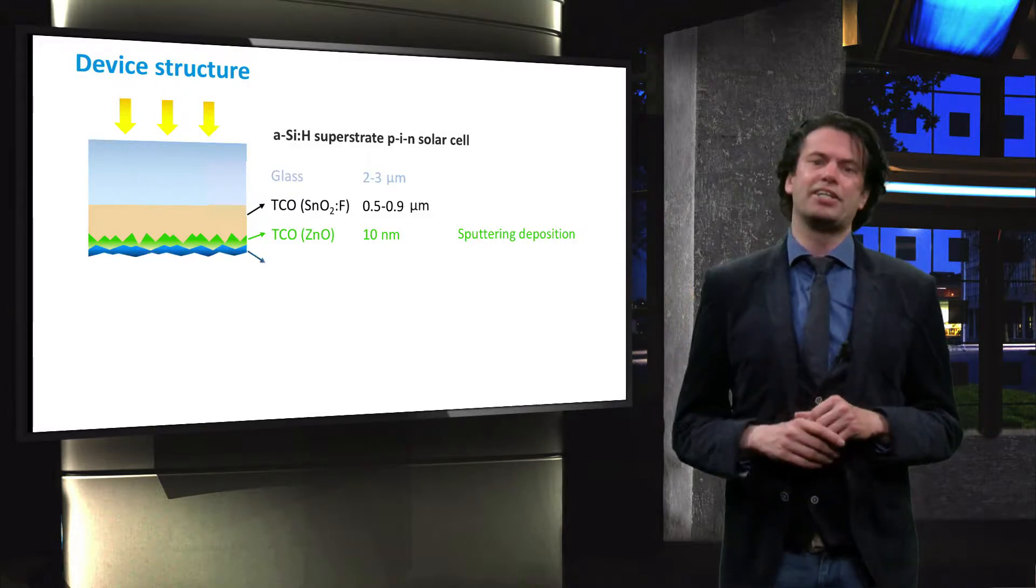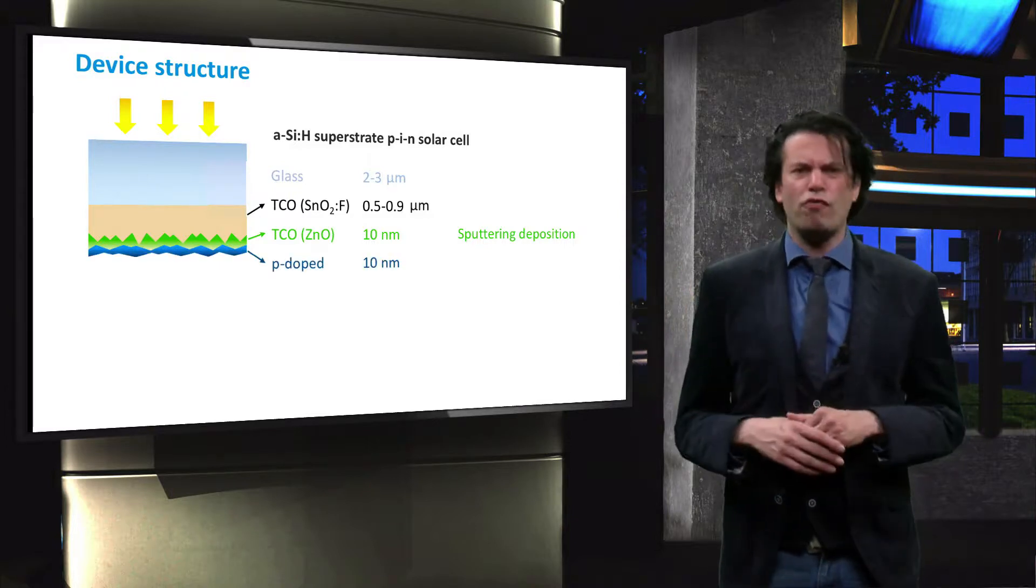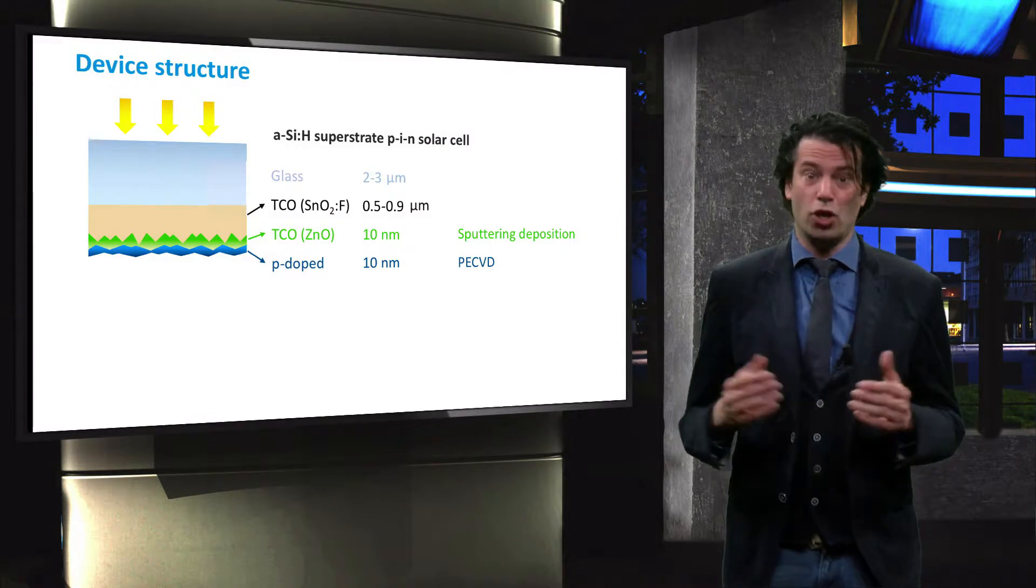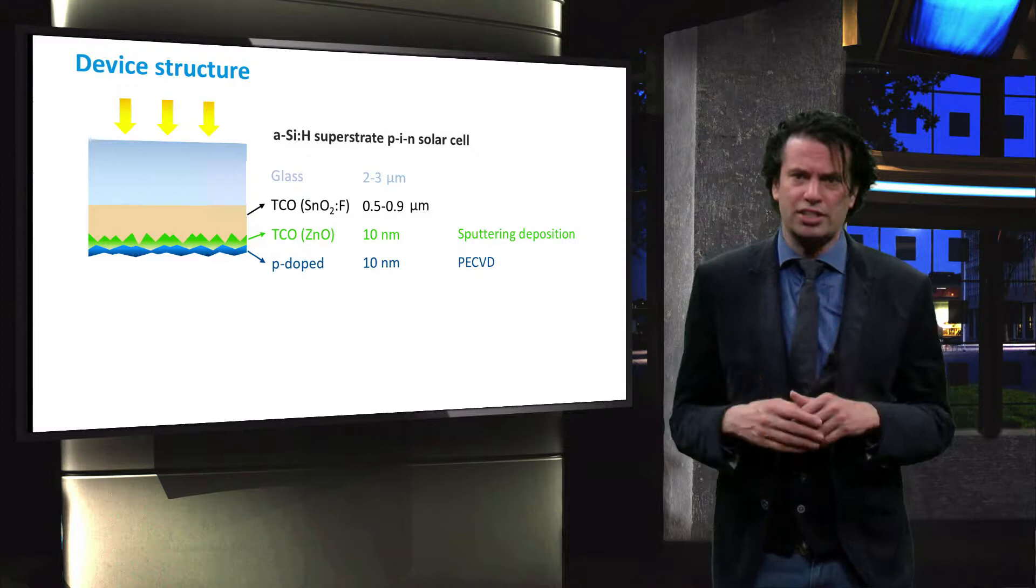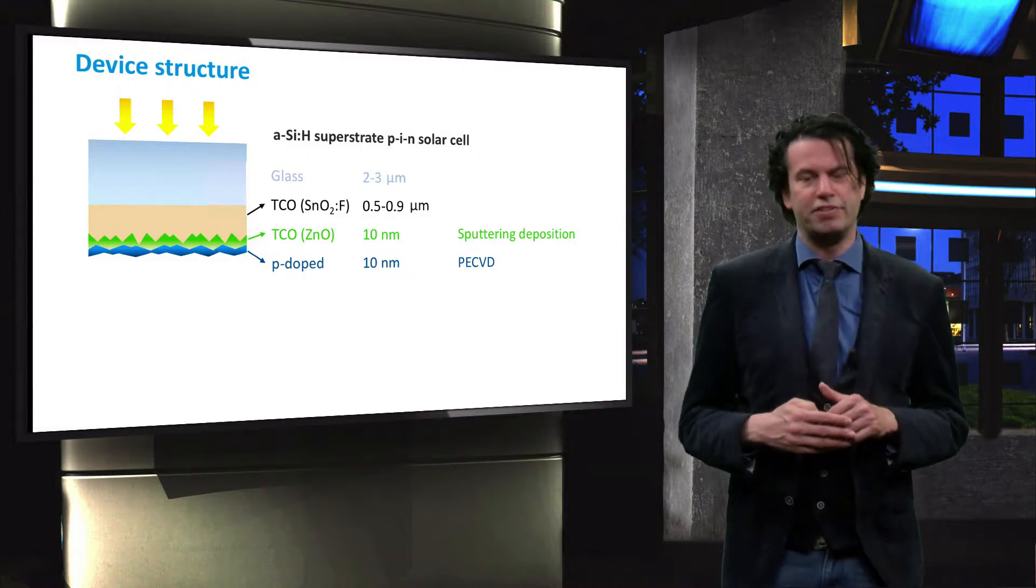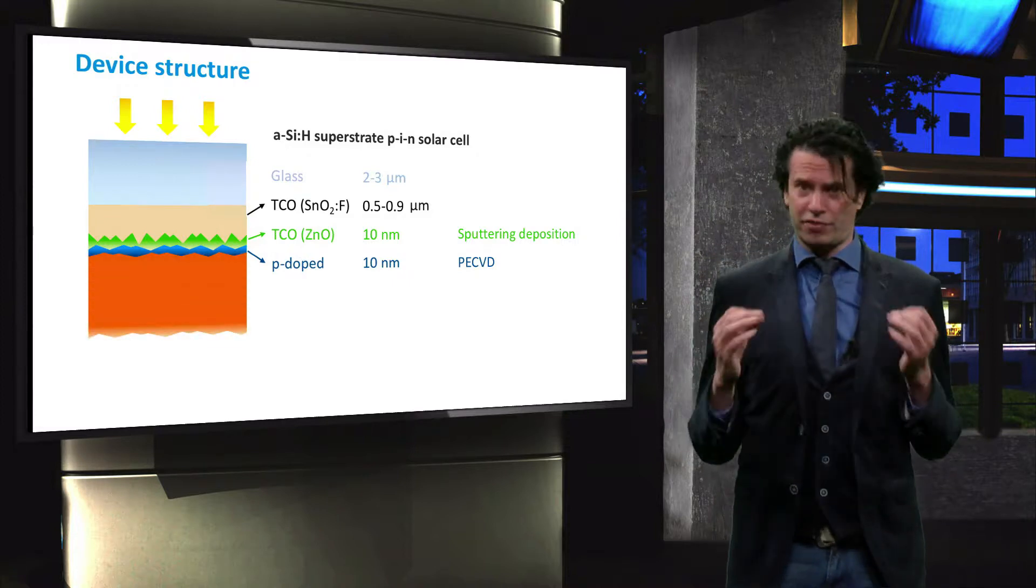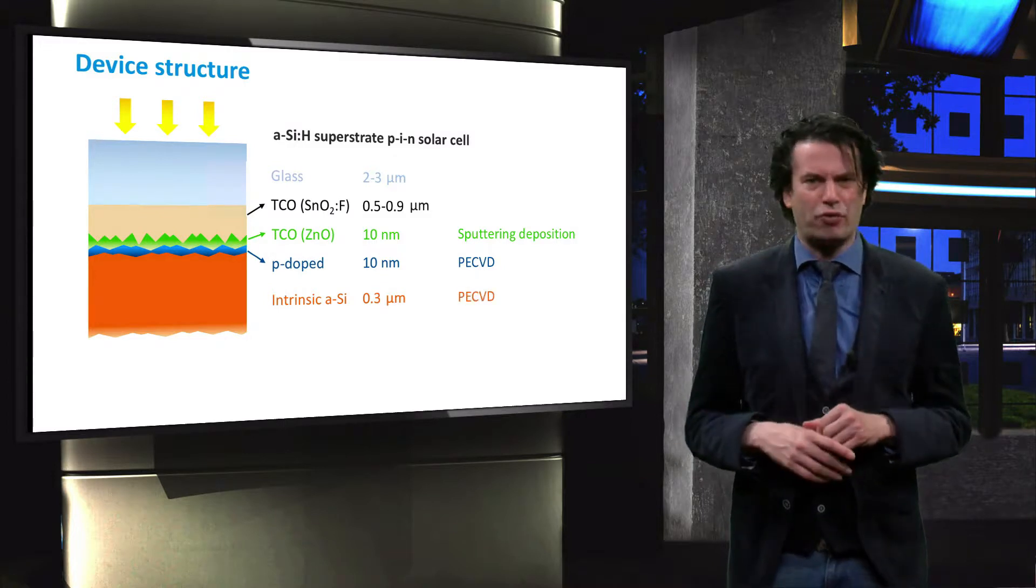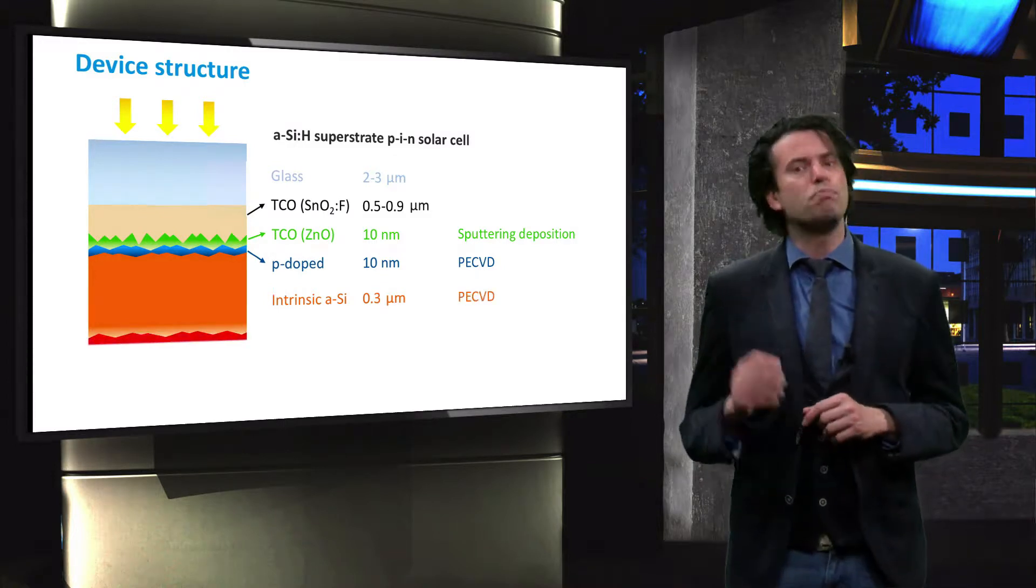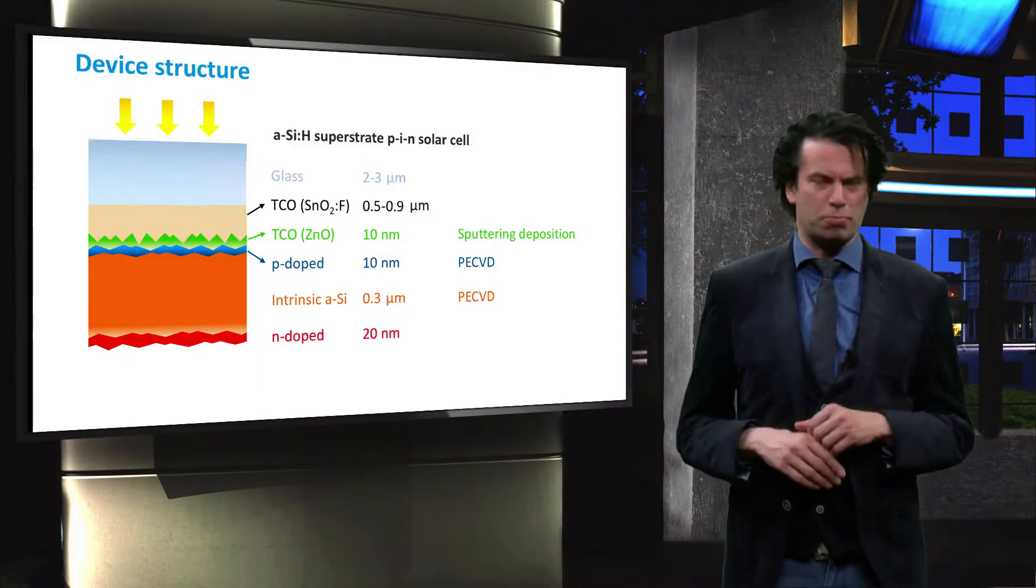A thin P-doped layer is deposited next of about 10 nm. The doped layers are generally a silicon carbide or a silicon oxide deposited using PECVD. The intrinsic amorphous silicon layer is then deposited with a thickness of about 300 nm, followed by an N-doped layer with a thickness of about 20 nm.